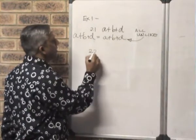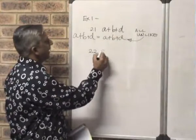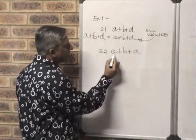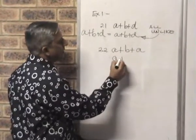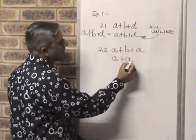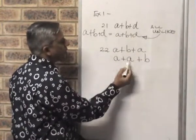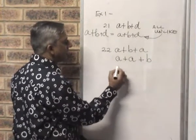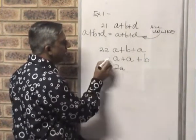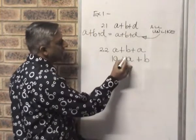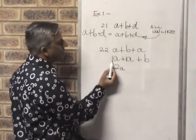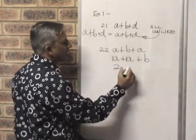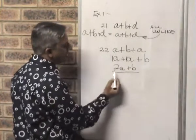Now let's look at 2.2. 2.2 was A plus B plus A. We can see clearly that you've got A and A, which are like terms, and then we're writing B at the end. So we group the like terms together and now we can add them up. A plus A will give you 2A — there's a 1 here that's understood, so 1 plus 1 gives me 2. So we've got 2A plus B, and that will be the final answer.